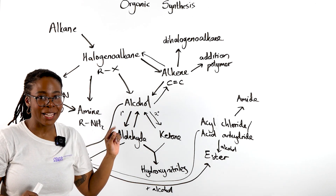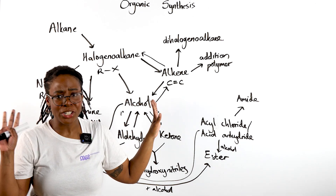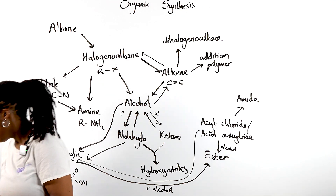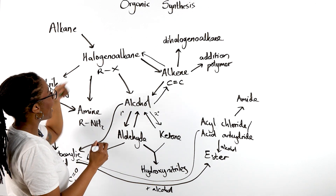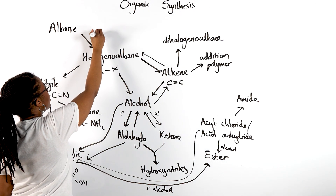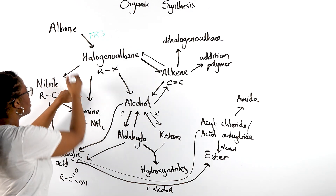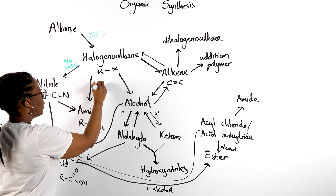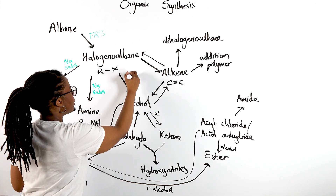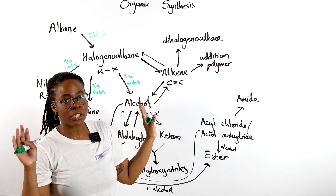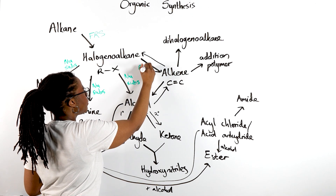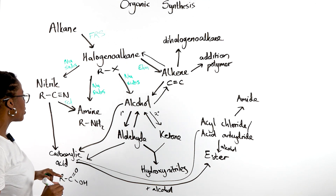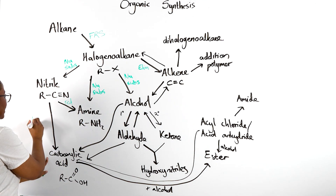Now we've also got our aromatic ones, but before we get to aromatic, let's make sure we know the names of the types of reactions or mechanisms. From an alkane to a halogenoalkane, that is free radical substitution. Most of your halogenoalkane reactions are nucleophilic substitution — we're swapping the X for whatever nucleophile we started with. But to get an alkene from a halogenoalkane, the mechanism is elimination. To get from a nitrile to an amine is reduction, and from a nitrile to a carboxylic acid that is called hydrolysis.